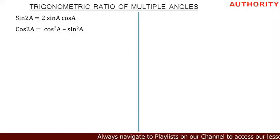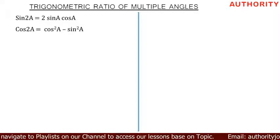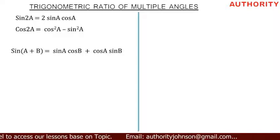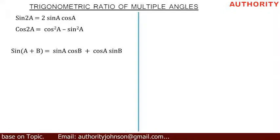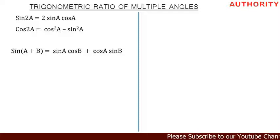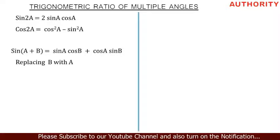Sine 2A is equal to 2 sine A cos A. Now, you remember that in one of our previous lessons we proved that sine (A + B) is equal to sine A cos B plus cos A sine B. That is true — we derived and proved that expression.